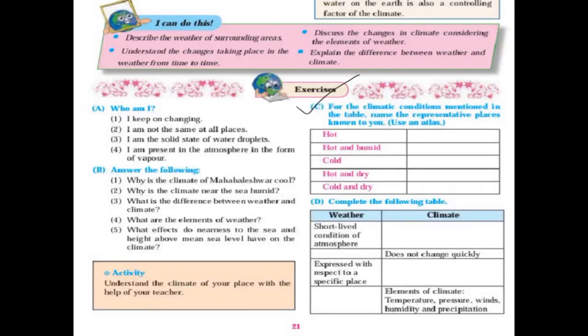For the climatic conditions mentioned in the table, name other representative places known to you. Hot: Bhopal. Hot and humid: Mumbai. Cold: Mannar. Hot and dry: Nagpur. Cold and dry: Matheran.